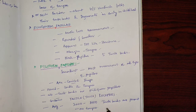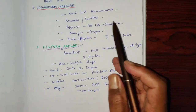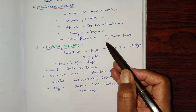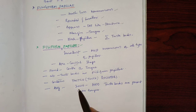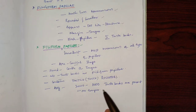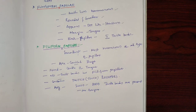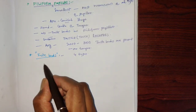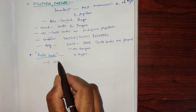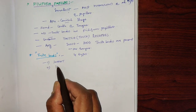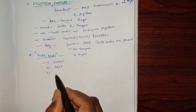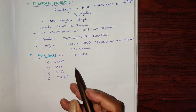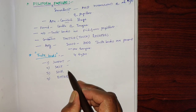Taste buds are found in two types of papillae: fungiform papillae, where each papilla contains five taste buds, and vallate papillae, which contain 100 taste buds each. Altogether, there are on average 2,000 to 5,000 taste buds in the human tongue. There are four types of tastes: sweet, salt, sour, and bitter.